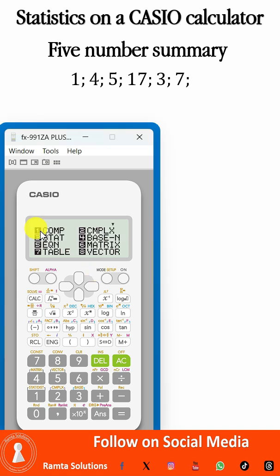We have to make sure our calculator is in statistics mode. So we select option three. Then we select one variable, which is option one.